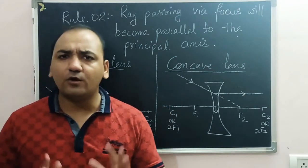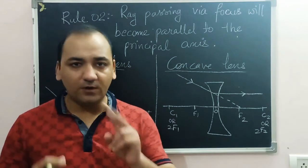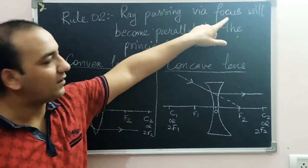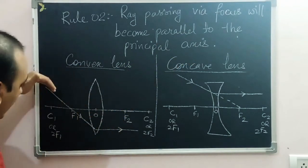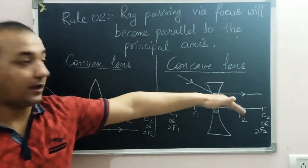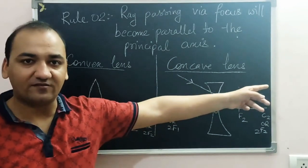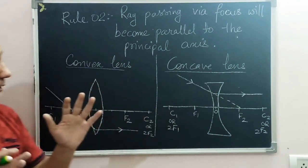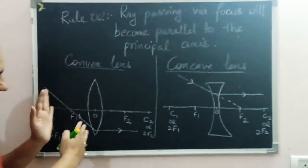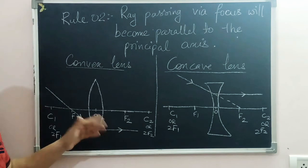Rule number two is the complete opposite of rule number one. Rule one said a ray parallel to the principal axis passes through focus. Rule number two says if the ray is passing through the focus, it will become parallel to the principal axis after refraction. For a convex (converging) lens, the ray passes through f1 and becomes parallel; for a concave (diverging) lens, the ray is directed toward f2 and becomes parallel after refraction.